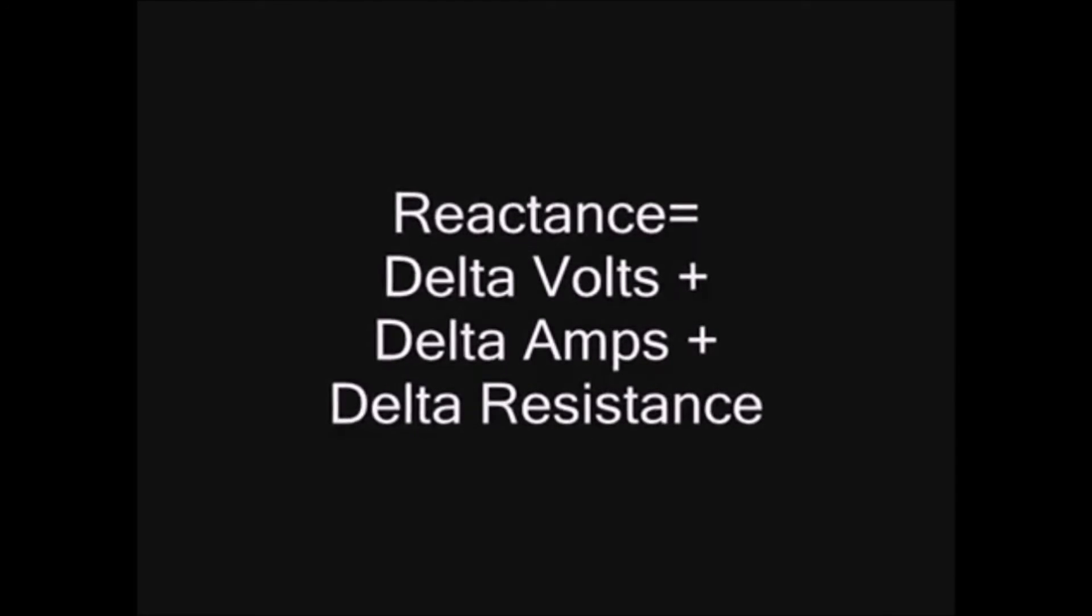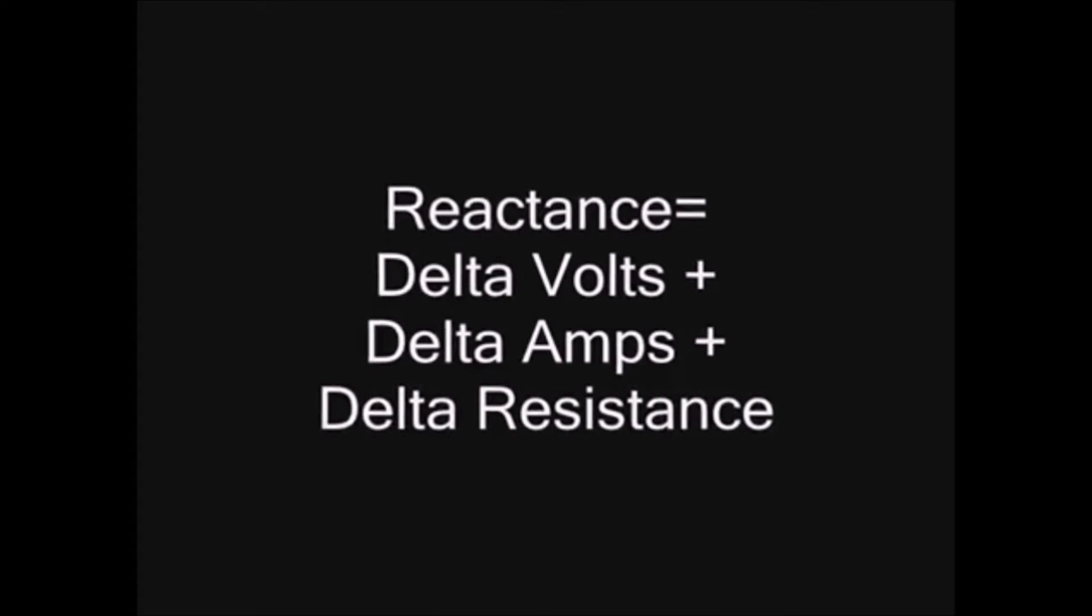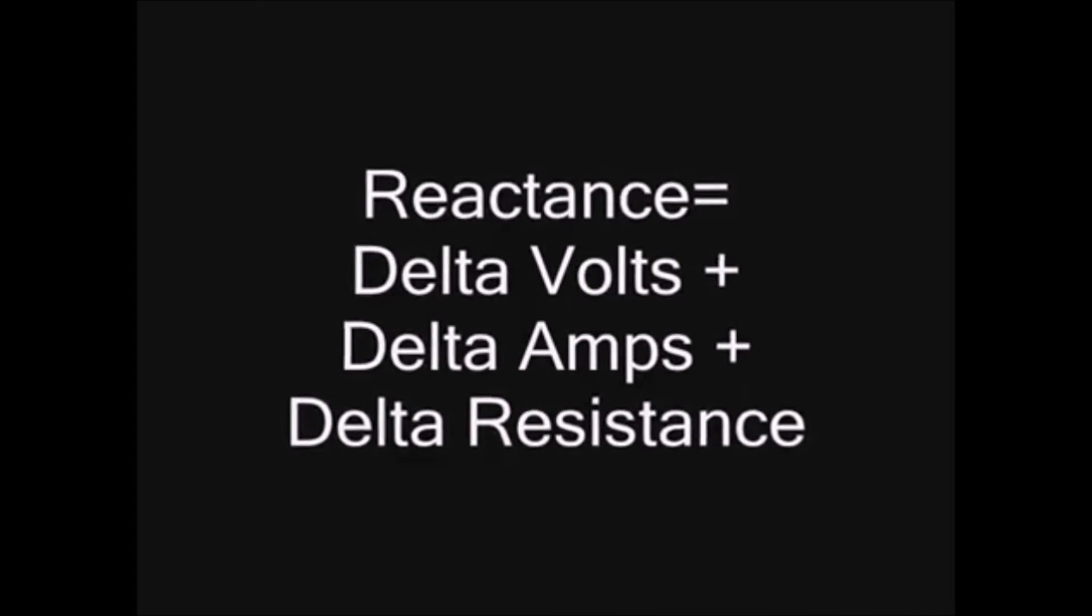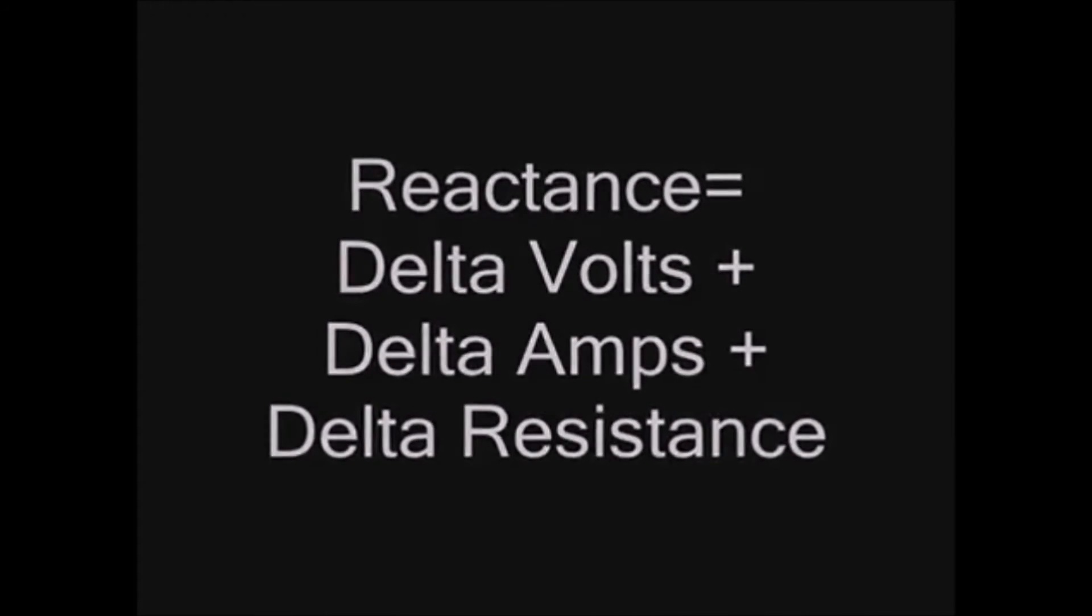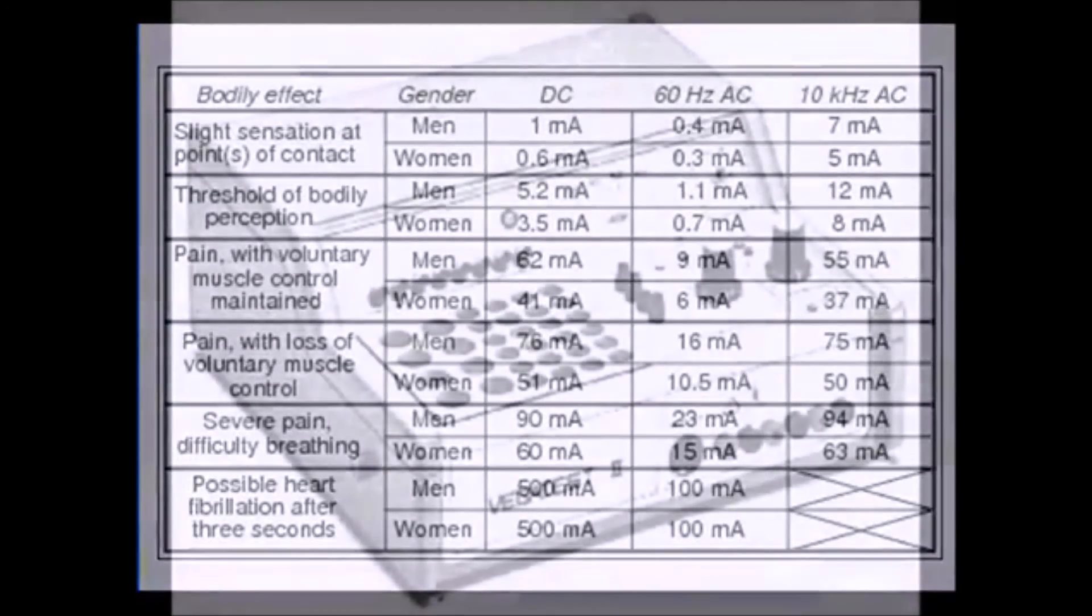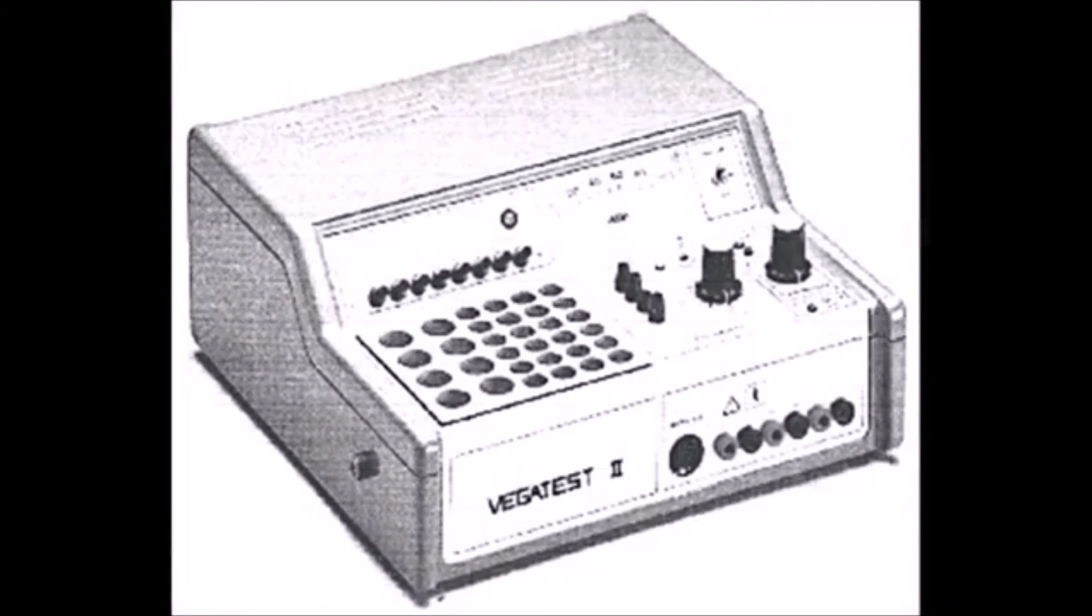The resistance also is a vector of reactance, as the change in volts added to the change of amps added to the change of resistance equals the reactance of a system. The total reactance of a system cannot be determined by simple resistance measures. We need voltage and amperage measures plus resistance to get the reactance measure.